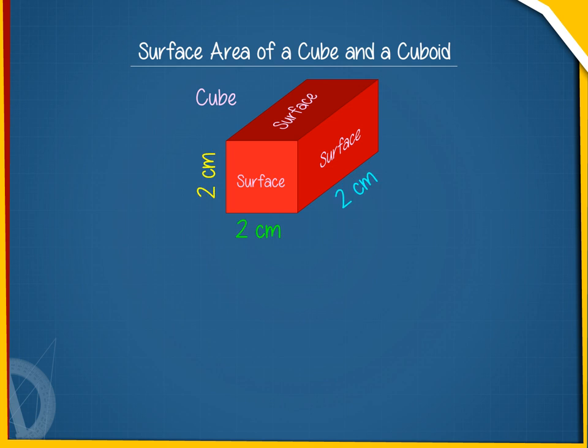A cube of edge 2 cm has 6 faces. Each face is of area 2 by 2 cm square, i.e. 4 cm square.